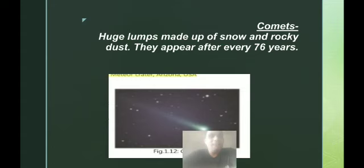Comets are huge lumps made up of snow, rocks, and dust. They appear after every 76 years. Today, everything you saw in these slides—nebulas, stars, Earth, moon, sun, solar system, meteoroids, asteroids, comets—everything is part of the universe. Thank you.